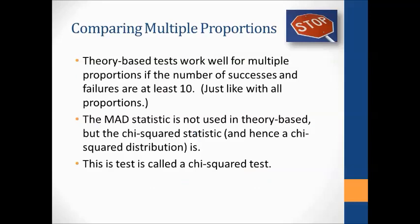For theory-based tests on multiple proportions, we use the same validity conditions as always for proportions: at least 10 successes and 10 failures. The MAD statistic is not used for a theory-based test — instead we switch to a chi-squared statistic, which is just another way of measuring how far apart the proportions are from each other. A chi-squared of zero means they're all the same. This test is called a chi-squared test, and it uses a chi-squared distribution.